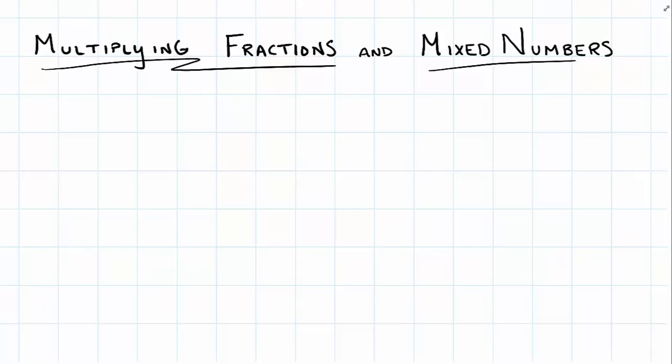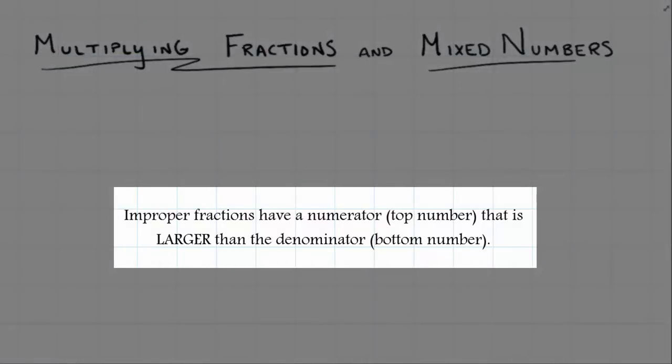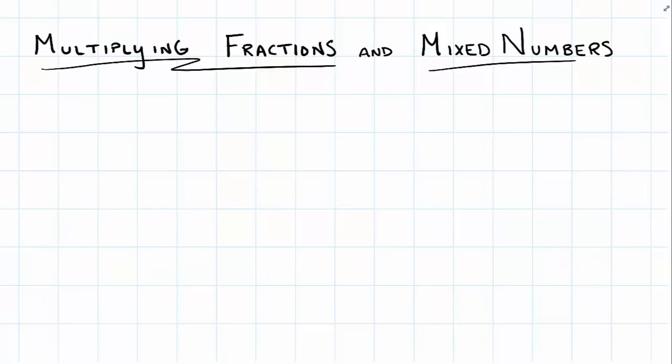We're going to multiply fractions and mixed numbers in this lesson. Besides knowing how to multiply fractions correctly, we've got to also know how to take mixed numbers, change them to improper fractions, multiply those fractions, and then change it back into a mixed number if we need to. We've also got to remember our integer rules for multiplying and dividing numbers.